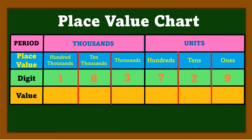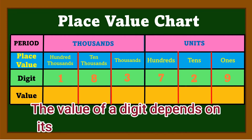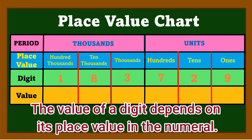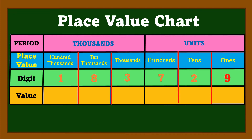Next, we're going to discuss about value. The value of a digit depends on its place value in the numeral. The value of 9, since it is in the ones place, is 9. The value of 2 in the tens place is 20. The value of 7 is 700, because it is in the hundreds place.